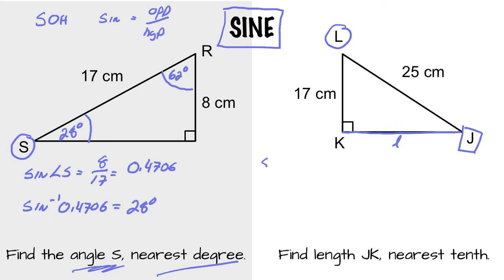So sine angle J equals opposite over hypotenuse, which is 17 over 25, 0.6800. Reverse that value.